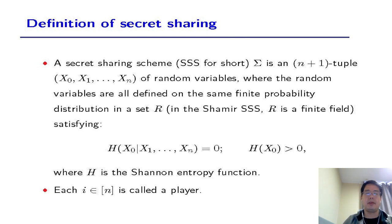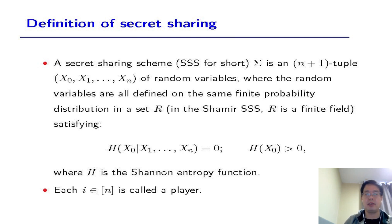Let us give a definition of a secret sharing scheme. A secret sharing scheme sigma is an N+1 tuple x0, x1, to xN of random variables. These random variables are all defined on the same finite probability distribution over a set R. In the Shamir secret sharing scheme, R is just a finite field. In black box secret sharing, R is an abelian group G. We must satisfy the following condition: the entropy H of x0 given x1 to xN is 0, namely given x1 to xN, x0 is completely determined.